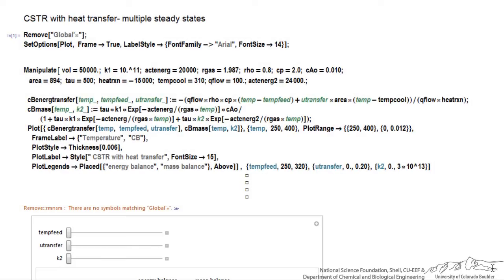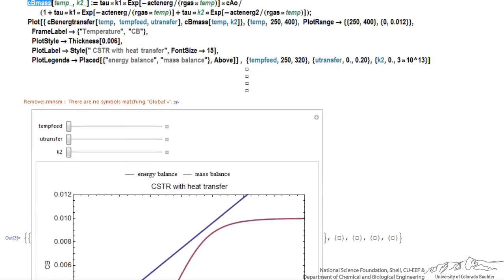What I'm showing here is the Mathematica program that I used to generate plots of concentration of the product B as a function of the reactor temperature. I generated a plot for the energy balance and a plot for the mass balance, then used this manipulate command, which I explained in other screencasts, to generate the plot.